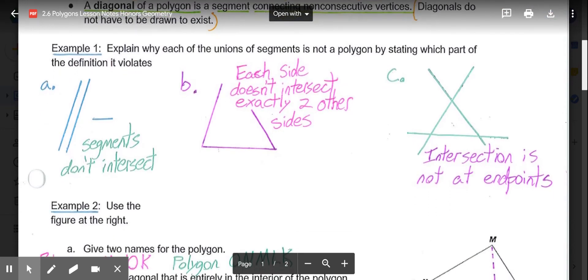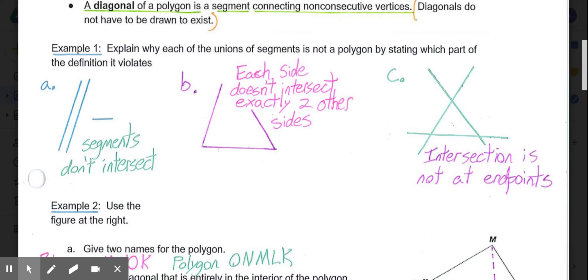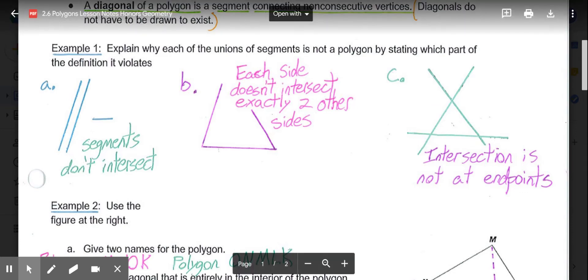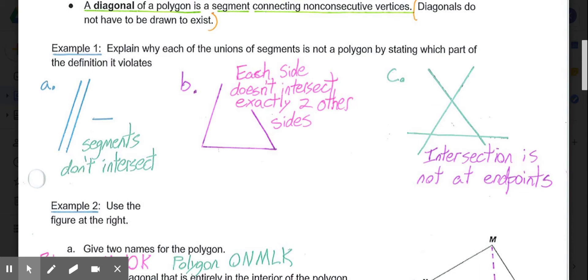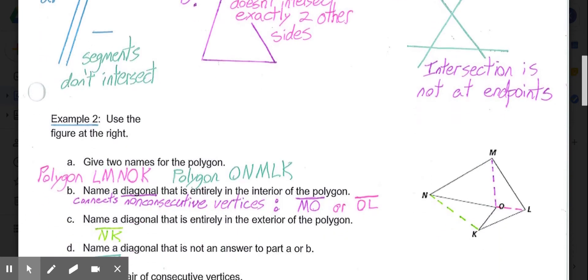Now, example 1. Explain why each of the unions of segments is not a polygon by stating which part of the definition it violates. You'll have to draw these three different images. In A, we have two line segments, and the third one over here. The problem with that is that these segments don't intersect. In B, the problem with this figure right here is that each side doesn't intersect exactly two other sides, meaning we have an opening or a gap. And then, in C, the problem with this is that the intersection of the sides is not at the endpoints.